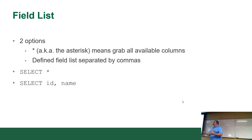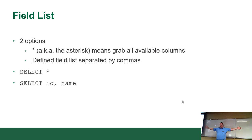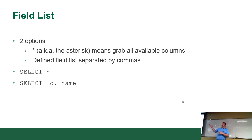The field list is straightforward. You have two options: use an asterisk, which means grab all available columns, or a defined list of fields separated by commas. You can mix the asterisk with a list, but that's pointless if you're grabbing everything anyway. People often say 'select star,' meaning give me everything.